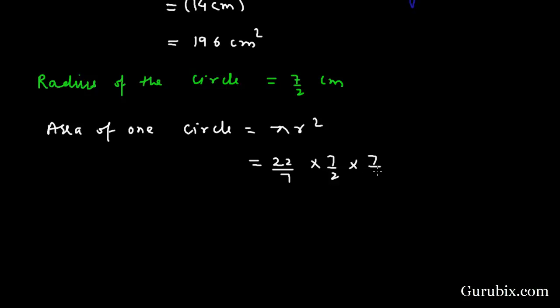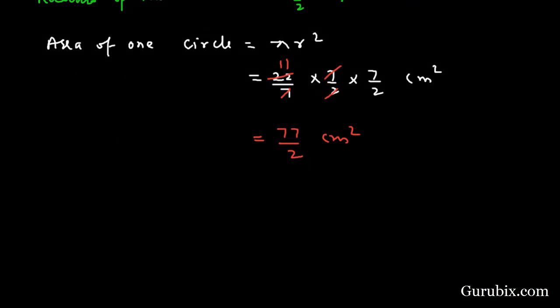We can easily cancel out 7 with 7 to get 22, then we have 77 over 2 centimeters squared. This is the area of one circle.